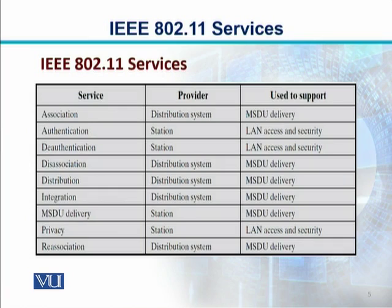Distribution is provided by the distribution system and is used to support MSDU delivery. MSDU delivery itself is provided by the station and is used to support MSDU delivery. Privacy is provided by the station and is used to support LAN access and security. Re-association is provided by the distribution system and MSDU delivery is used to support it.